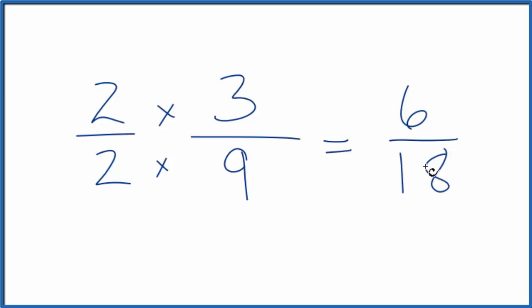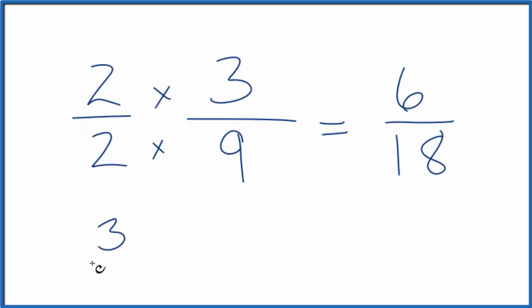So 6 over 18, that's an equivalent fraction to 3/9. They have the same value. Divide 3 by 9, 6 by 18, you'll get the same decimal. Let's try another one. How about 3 over 3?